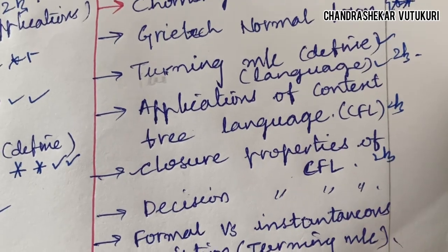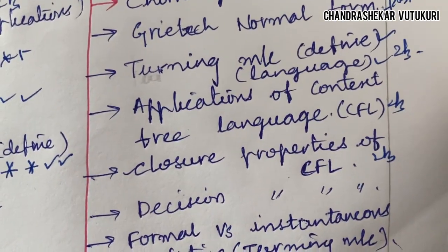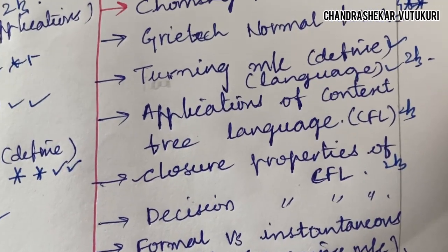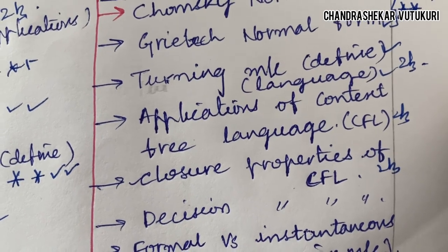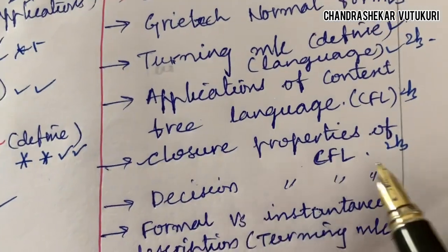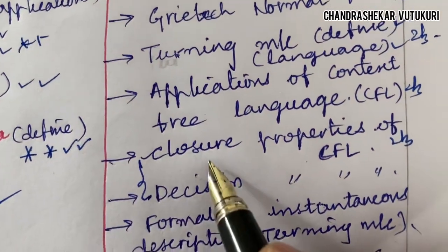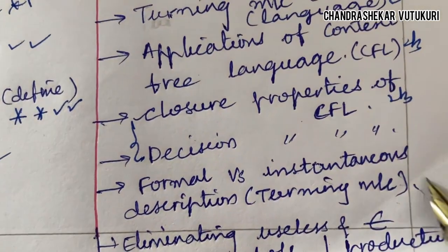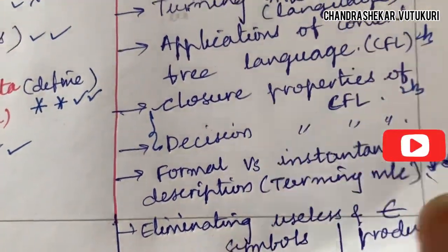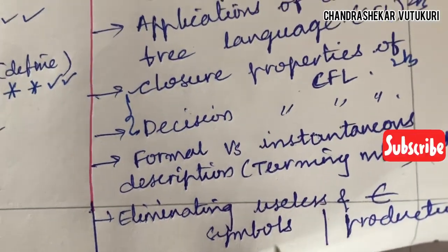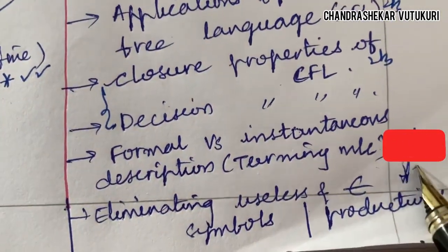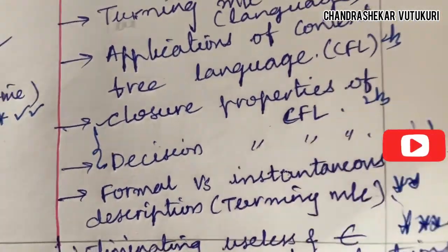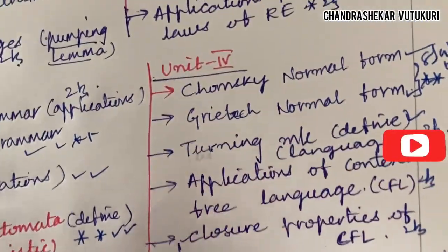Dear students, you are not supposed to skip any part of the course. You are supposed to work out each and every part to score 15 out of 15 marks — 5 from short questions and 10 from long questions for each unit. Decision properties of CFL, differences between decision and closure properties, formal versus instantaneous description, Turing machine problems, eliminating useless symbols, and eliminating epsilon productions may appear as topmost questions or short questions, possibly in combination as question 9AB.